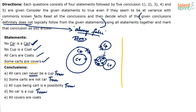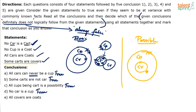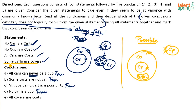Let me draw the possible diagram neatly. Here are cars, coats — this part is not to be disturbed. Here we have cups, which cannot touch coats. Now, I want all covers to be inside coats — all covers are taken inside coats. And here is cart. Look at this diagram: no car is a cart — disjoint, correct. No cup is a coat — disjoint, correct. All cars are coats — correct. Some carts are covers — correct. Not even one statement is violated. And I find that all covers are inside coats. So without violating any statement, all covers can be coats.